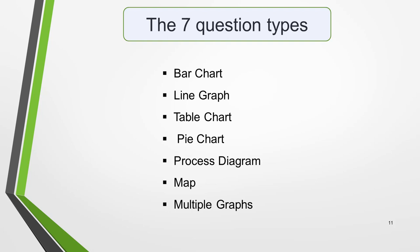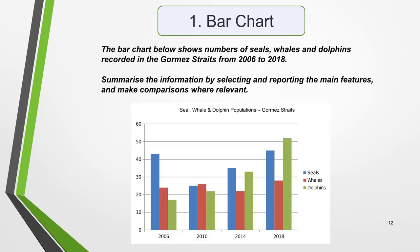First, a reminder of the seven question types: bar charts, line graphs, table charts, pie charts, process diagrams, maps, and multiple graphs. Bar charts, or bar graphs, are very common Task 1 questions. The data can be presented vertically, as in this example, or horizontally. Here's a typical question: The bar chart below shows numbers of seals, whales, and dolphins recorded in the Gormes Straits from 2006 to 2018. Summarise the information by selecting and reporting the main features, and make comparisons where relevant. Every question would be followed by the words: write at least 150 words.